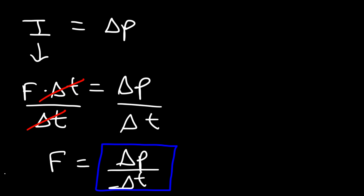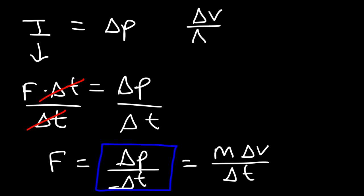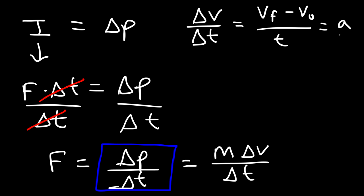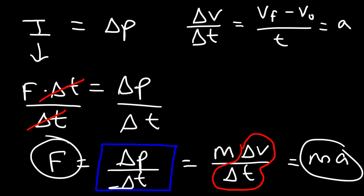This equation is related to Newton's second law. Momentum is mass times the change in velocity, and the change in velocity over the change in time is the acceleration — v final minus v initial divided by t. So we can replace delta v over delta t with acceleration, giving us mass times acceleration. According to Newton's second law, the net force on an object equals mass times acceleration, which is also equal to the rate at which the momentum of the object changes.